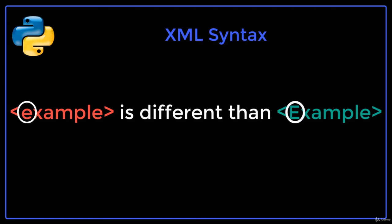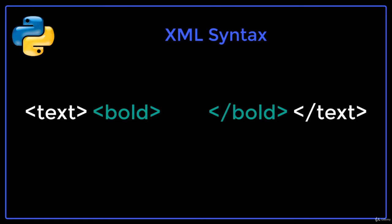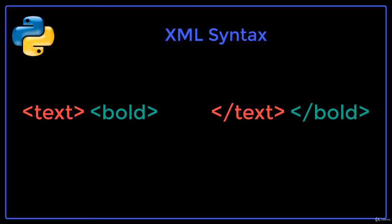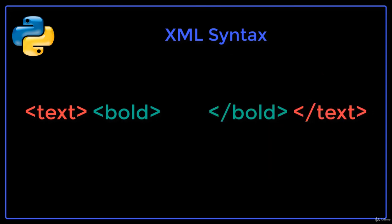XML elements have to be properly nested. For example, say we have an opening and closing text tag, and an opening and closing bold tag inside of our text tags. The idea of properly nesting tags is that if we have an opening tag — text in this case — followed by another opening tag — bold in this case — the second tag must be closed first before the first tag. Having the closing text tag before the closing bold tag would not follow the syntax rules of XML. We should close the bold tag before closing the text tag.